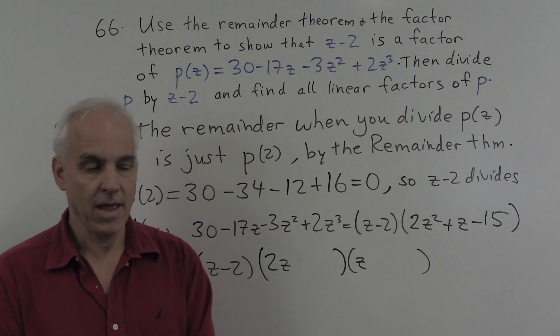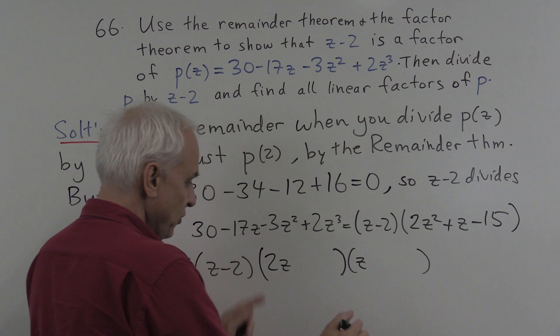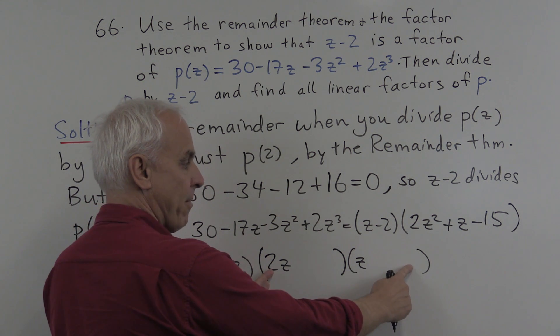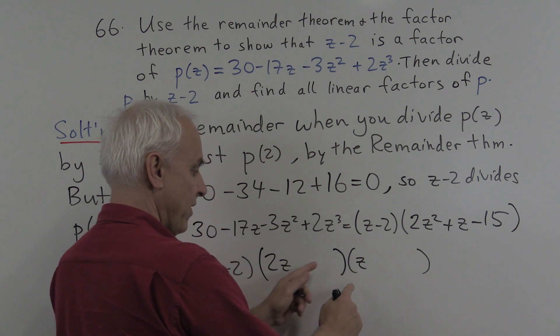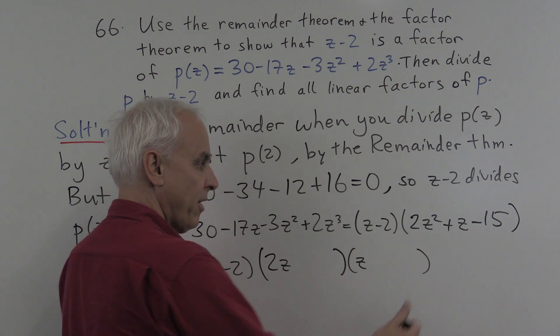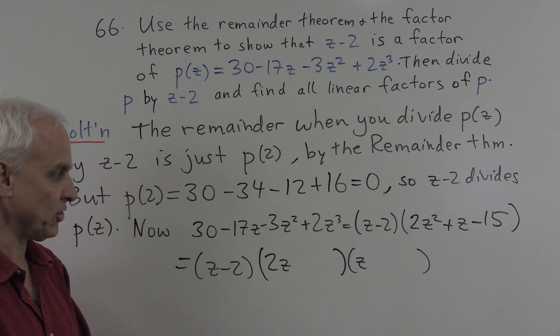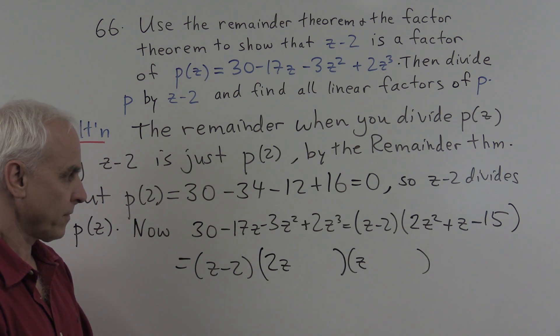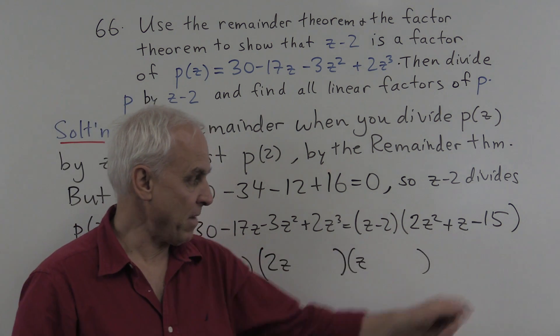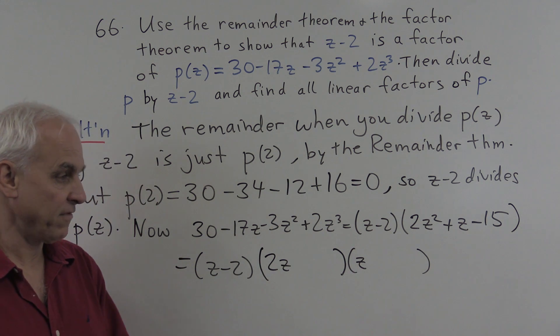And we have to find two numbers here that have the property that when you multiply them, you get minus 15. And when you take the 2 times this number, and you add 1 times this number, you get a total of 1, the coefficient of z. All right, so factors of minus 15: minus 3 and 5, or maybe minus 5 and 3, or maybe 1 and minus 15.